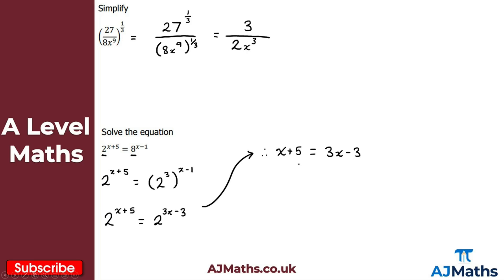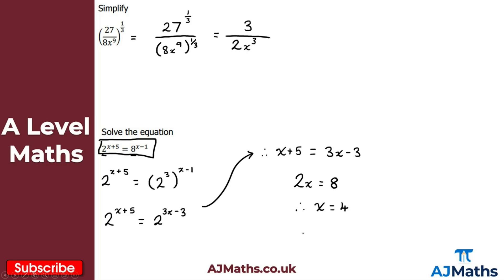This is now straightforward to solve. Subtract x from both sides and add 3 to both sides, giving 2x equals 8. Divide by 2, so x equals 4. You can verify this solution by substituting x equals 4 back into the original equation — the left-hand side should equal the right-hand side. That's a useful exercise to check.